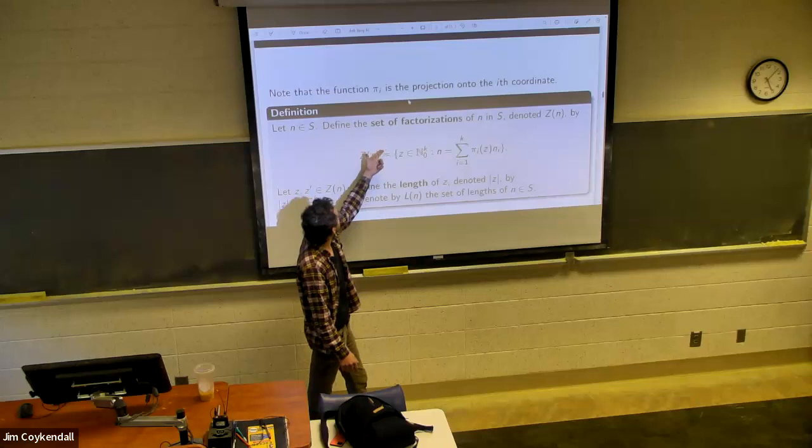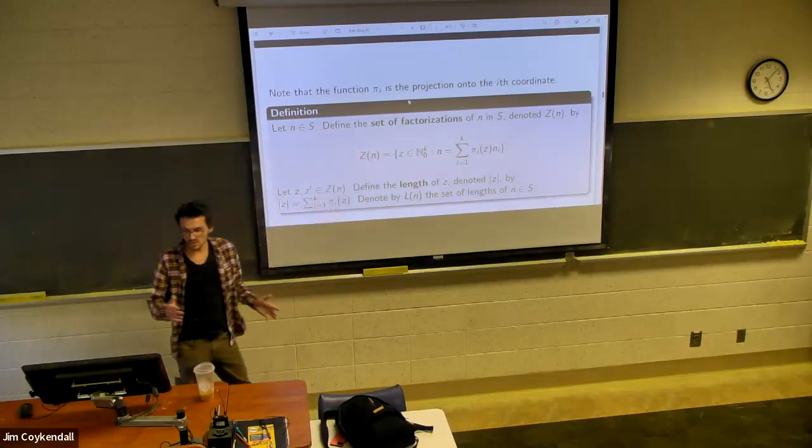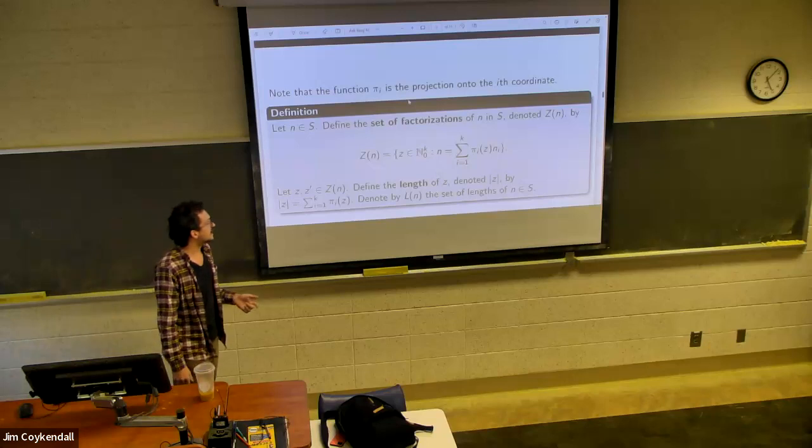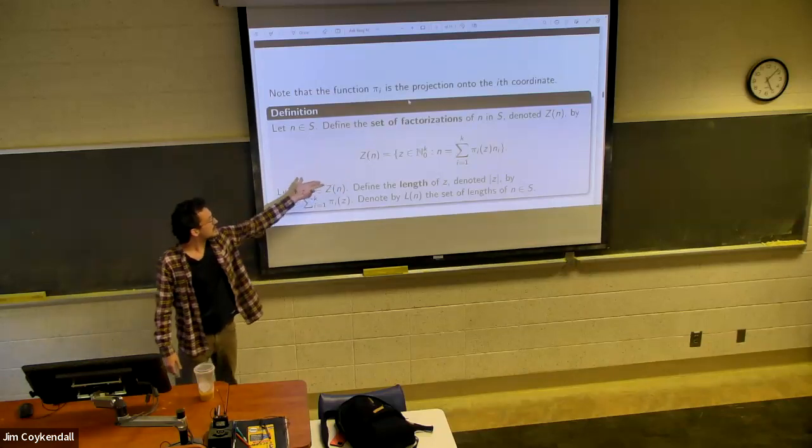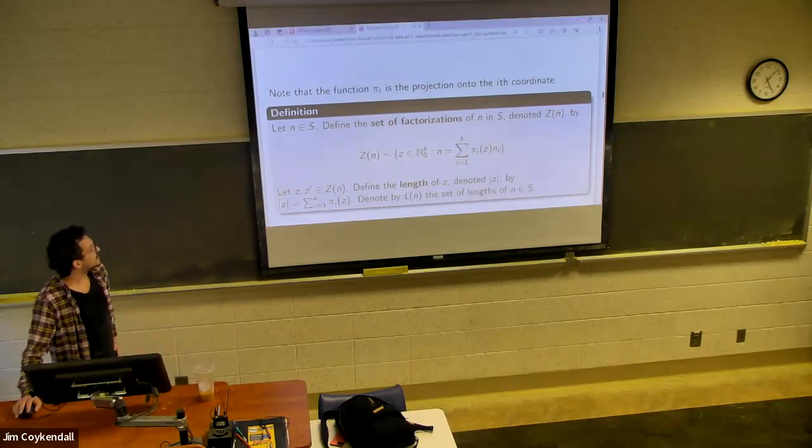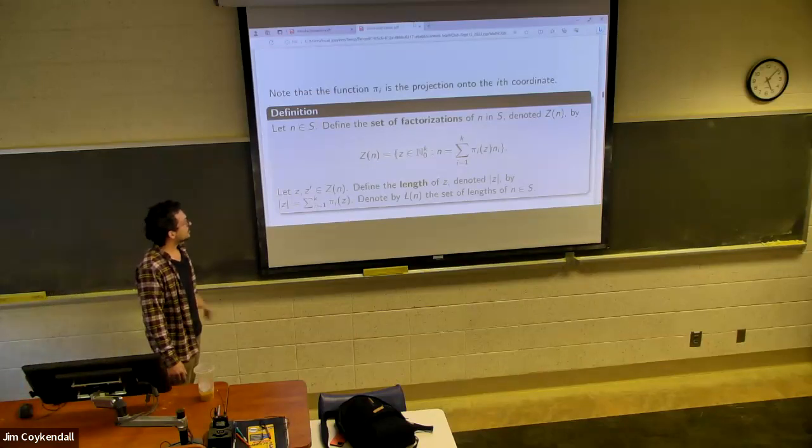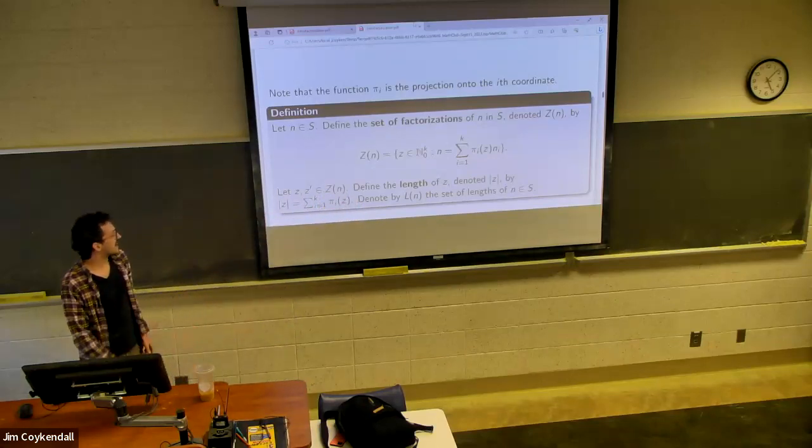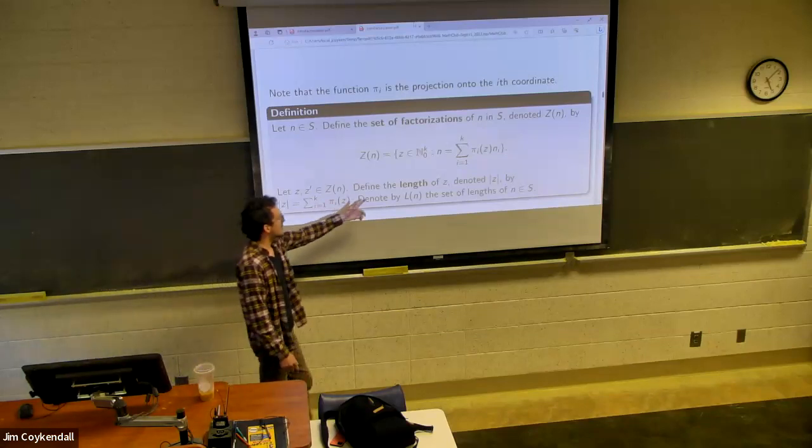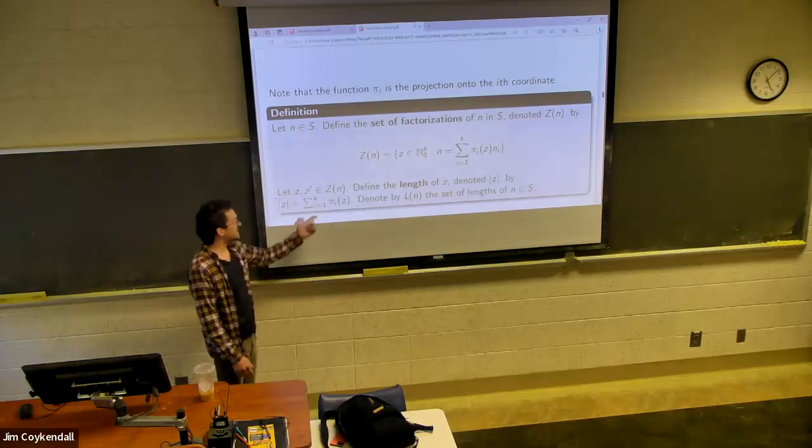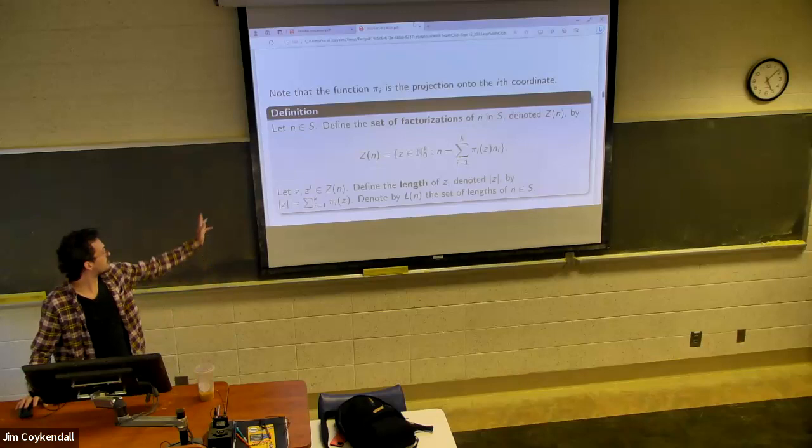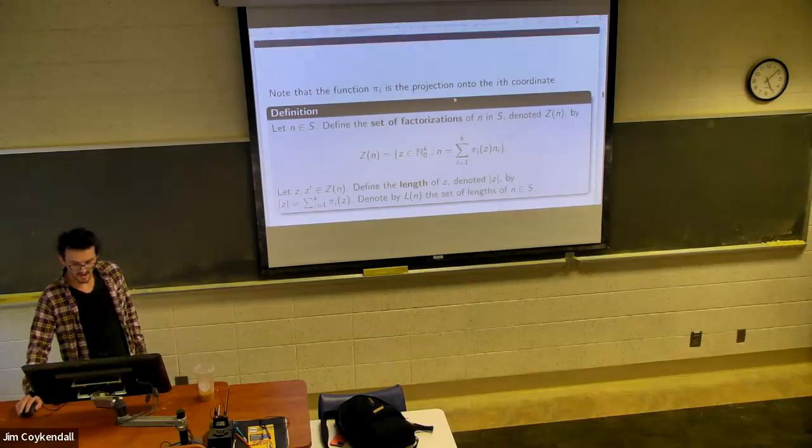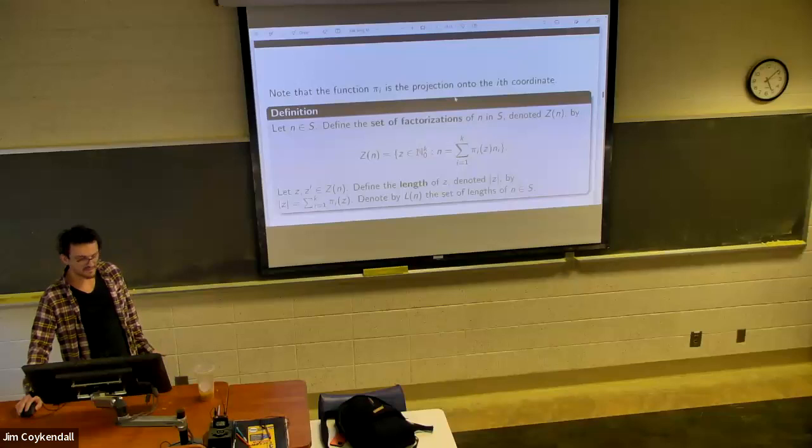So to define the set of factorizations, we're going to denote it by Z. And we're just going to take the coefficients and put them in an ordered n-tuple, depending on your number of generators. And we'll do an example right after this showing exactly what Z would look like for a particular n. So let's let z be in your factorizations for some n. Then we define the length of z denoted with the absolute value bars to be the sum of the coordinates. I kind of got thrown off because I forgot to remove that z prime. So it's not really supposed to be there.